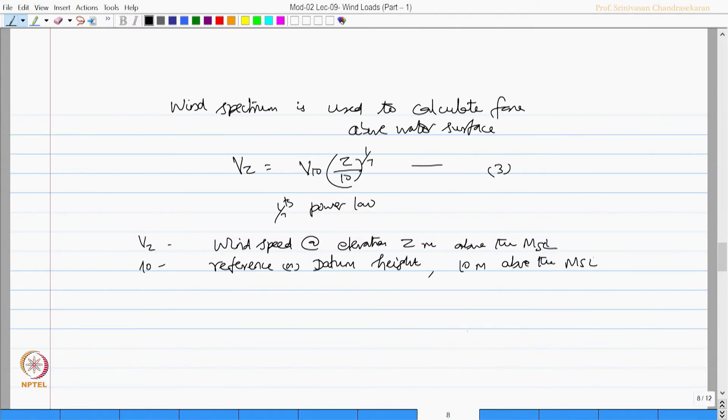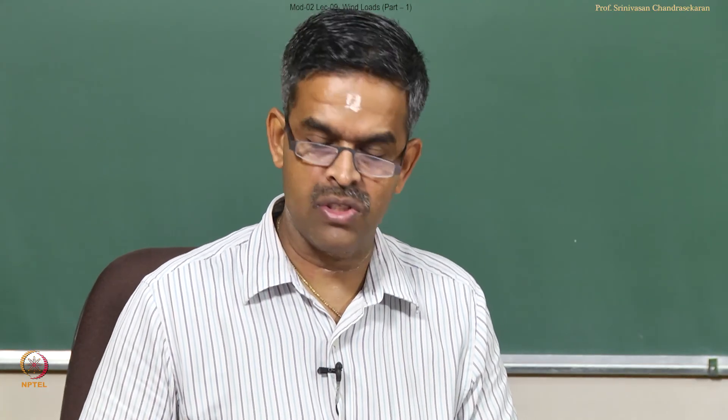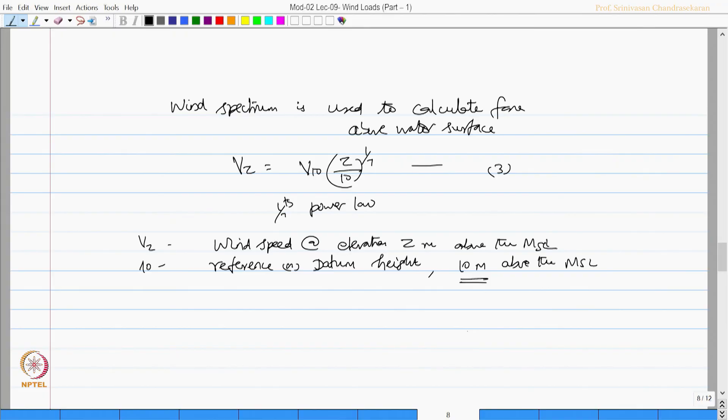The 10 refers to a reference or datum height, 10 meters above mean sea level. It is simple: substitute z equals 10 here and you will see that up to 10 meters wind velocity remains constant. v_10 is the wind speed at 10 meters above mean sea level.